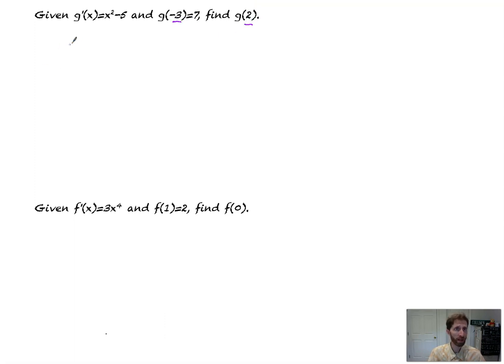So what we're doing is we're going to look at this as the integral from negative 3, the lower value, to 2 of g prime of x dx is equal to, fundamental theorem, it would be g of 2 minus g of negative 3. That's the fundamental theorem.